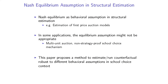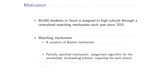One of the examples that Professor Taksu emphasized is multi-unit auction. Another application, which is also the topic of this talk, is non-strategy proof school choice mechanisms. What motivated this project is a real-life school choice mechanism happening in Seoul, Korea. About 80,000 students in Seoul are assigned to high schools through a centralized matching mechanism each year since 2010.